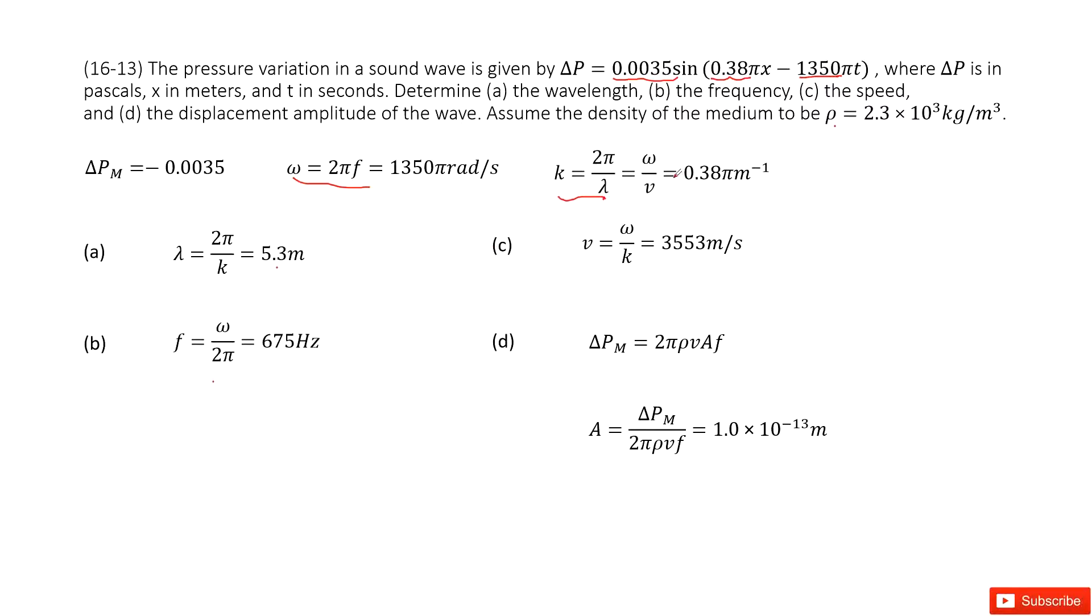The next one, we need to find the speed. For speed in this function, k equals omega over v. So we can write the function v equals omega divided by k. The answer is there.